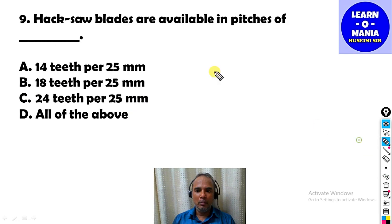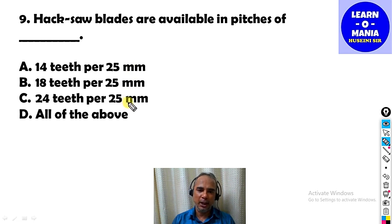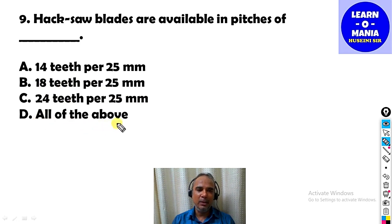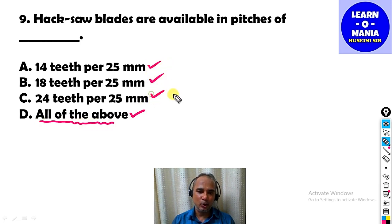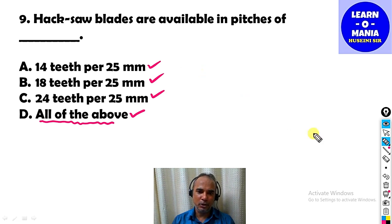Our next MCQ: Hacksaw blades are available in pitches of — 14 teeth per 25 mm, 18 teeth per 25 mm, or 24 teeth per 25 mm? The answer is option D — all of the above. All these are available pitches for hacksaw blades. Pitch means how many cutting teeth per 25 mm.